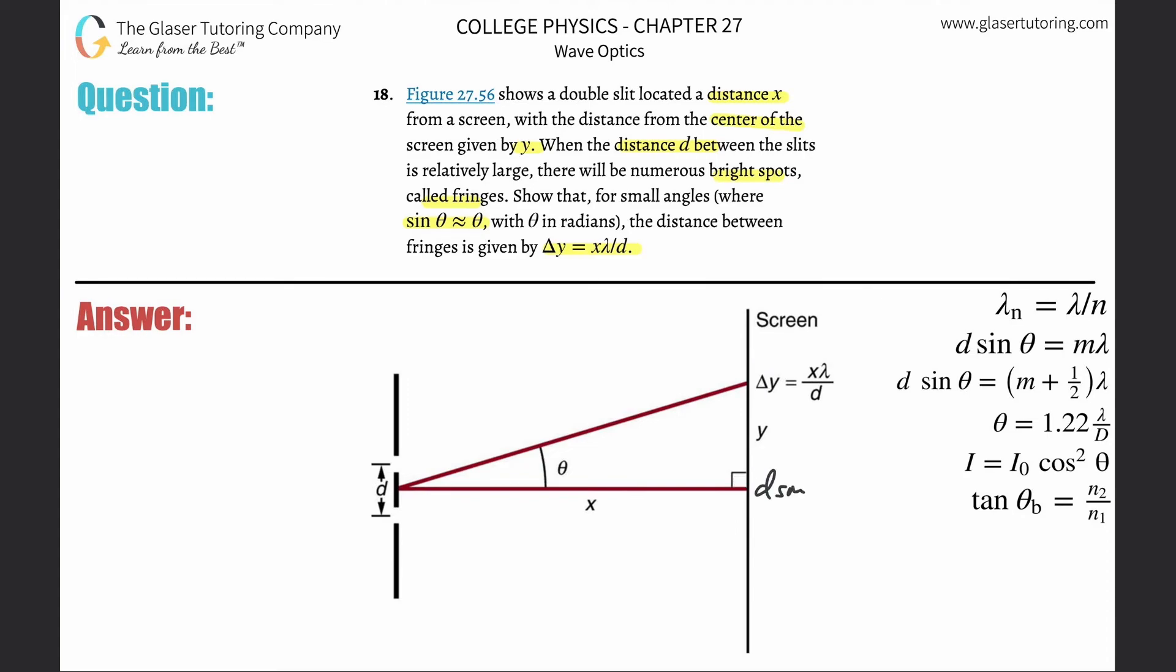We can say it's d sin θ equals mλ. And then we can create an equation for this at that particular point. We can say that's d sin θ of m+1 is going to be equal to then (m+1) times λ. I really should put that in parentheses.